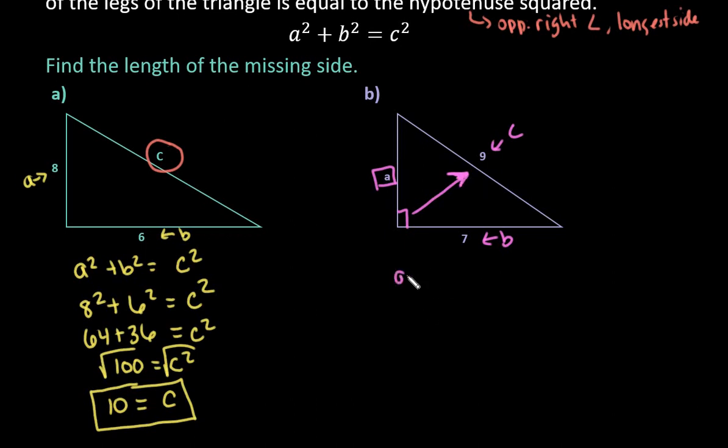So I would set this up as A squared plus B squared is equal to C squared, which I started to write C instead of 9, so 9 squared. So then if I just simplify and do the math,